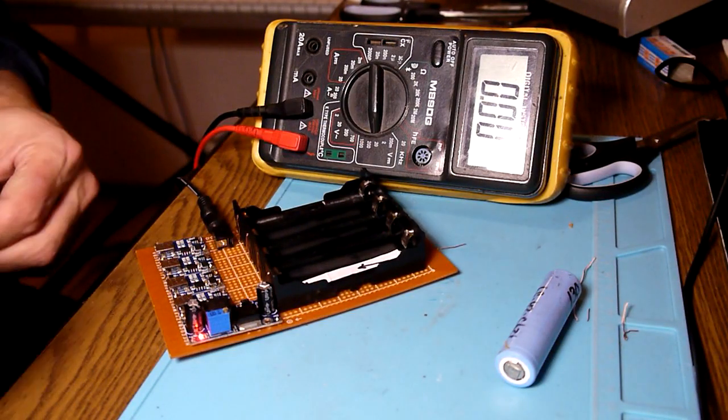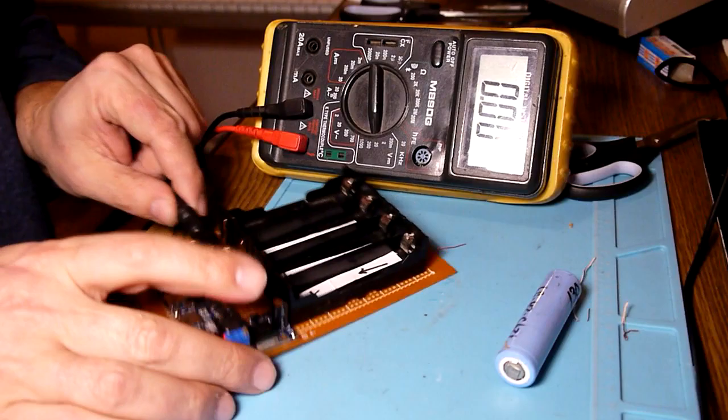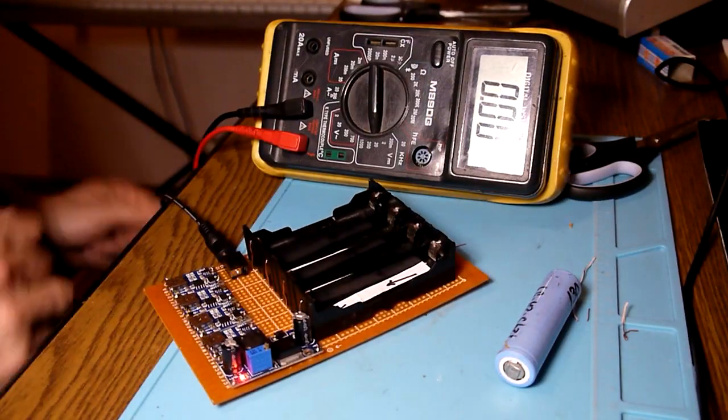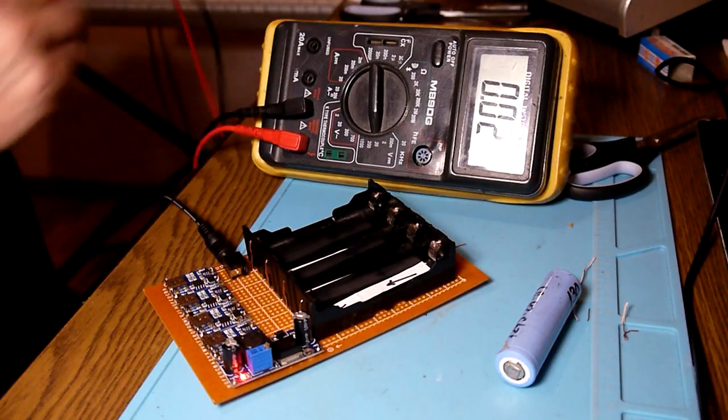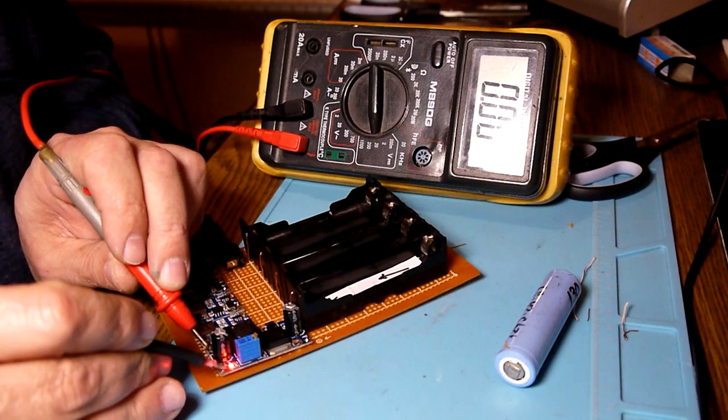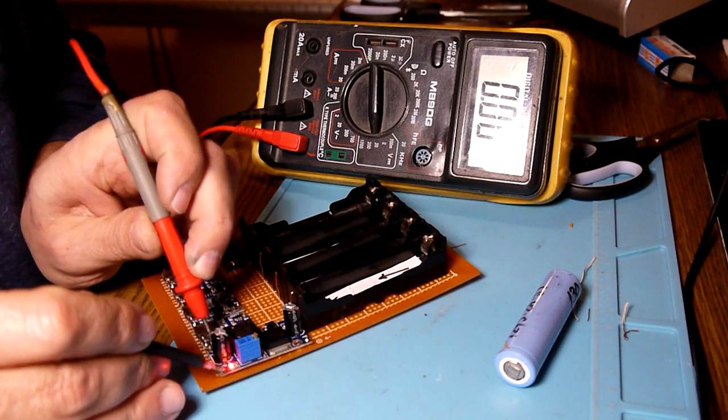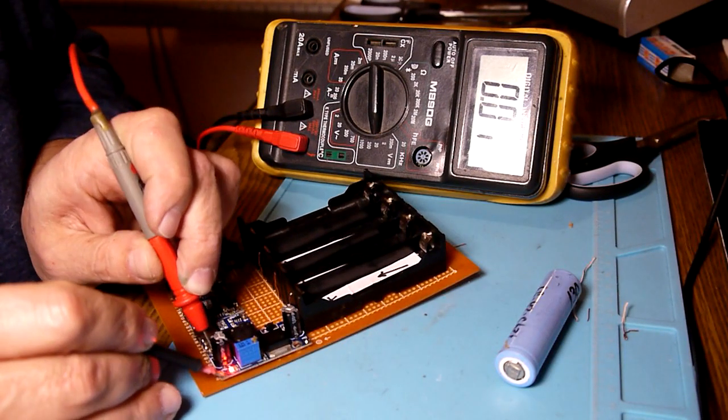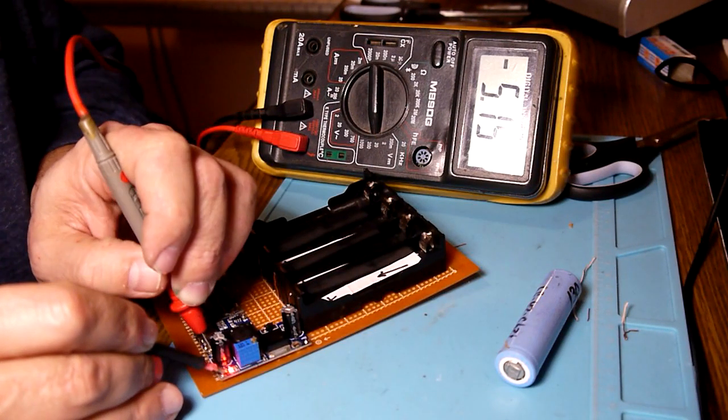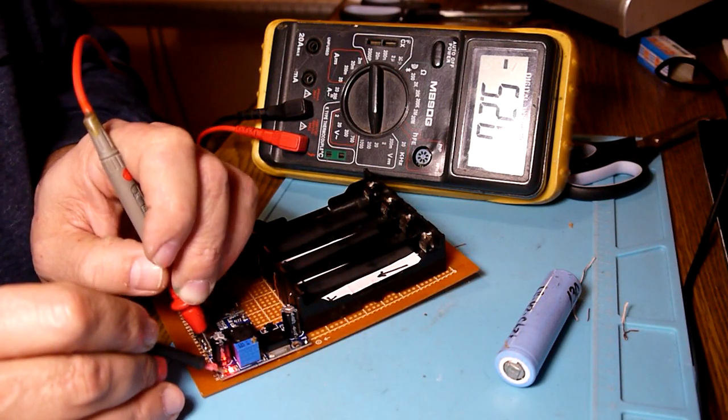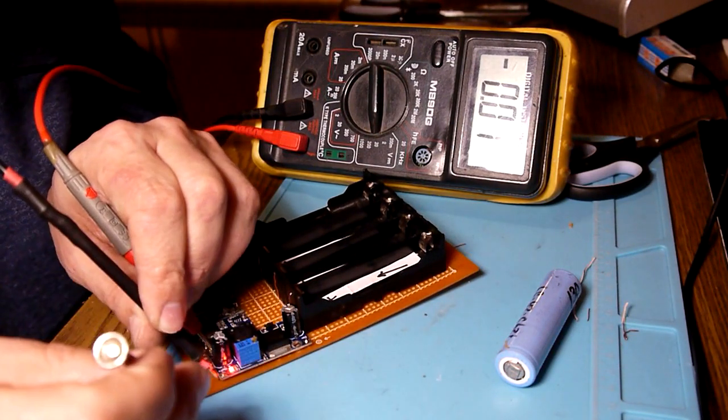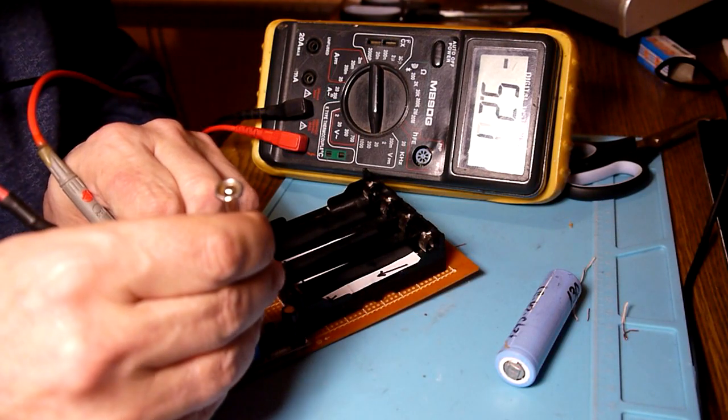Let's have step number two and put the step-down. Everything is connected here and I have 12 volts in for now. Let me see how much do I have at the output of the step-down converter.